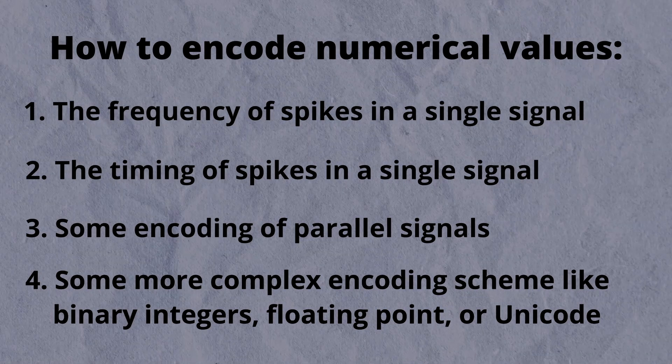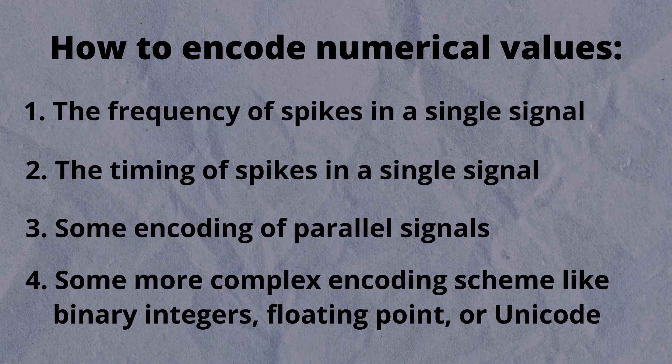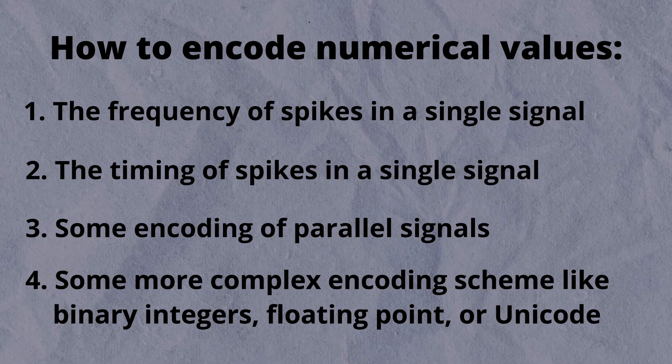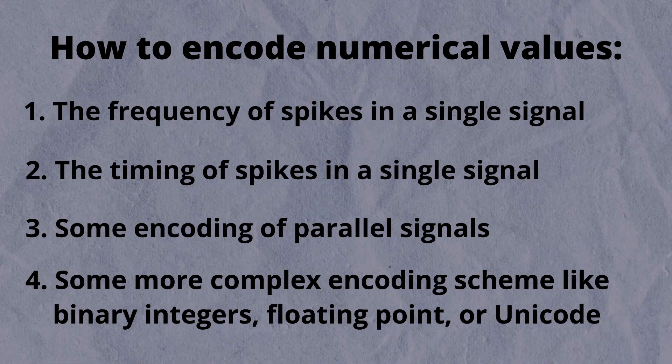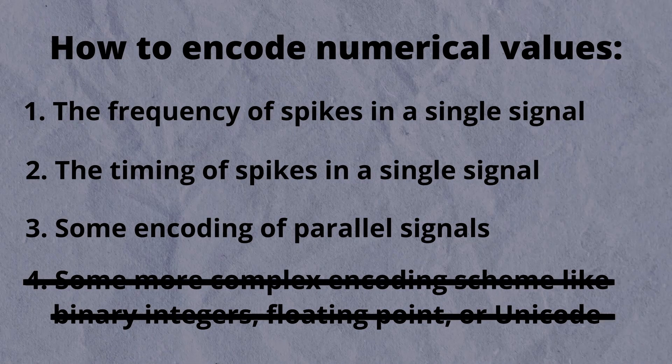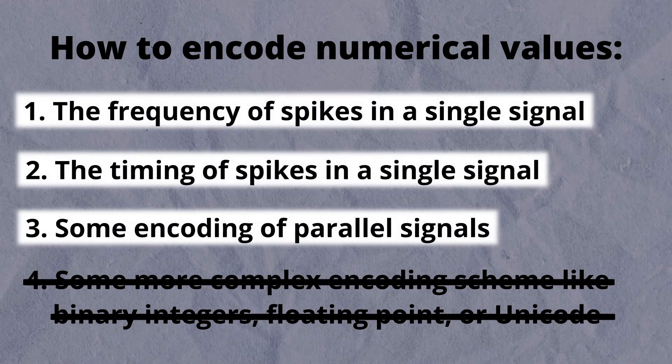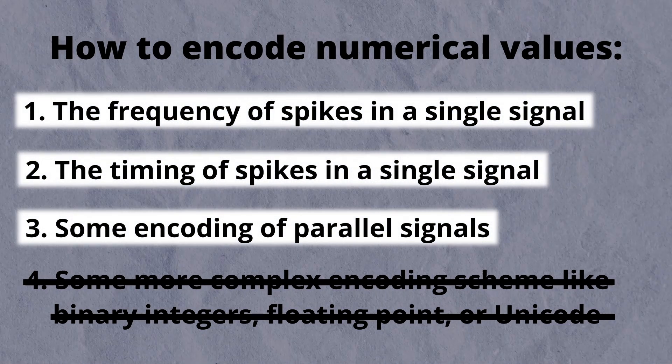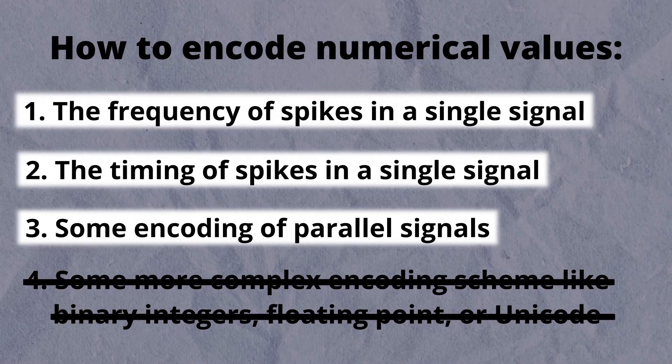While it is theoretically possible that streams of neural spikes could encode binary numbers or unicode strings, it is impossibly unlikely. The first three methods, however, do appear in your nervous system, and all of them exist in computers.